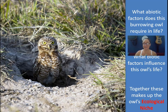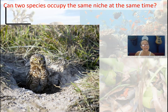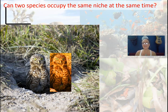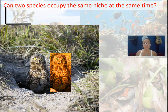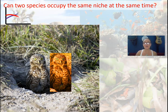Can two species occupy the exact same niche at the exact same time? The answer is no. If another burrowing owl required the exact same biotic and abiotic factors, the competition at every single level would just be too great. Think about it: if another person competed for my classroom, my students, my space, and my food at every meal, you couldn't live like that. Therefore, two species cannot occupy the same niche at the exact same time.